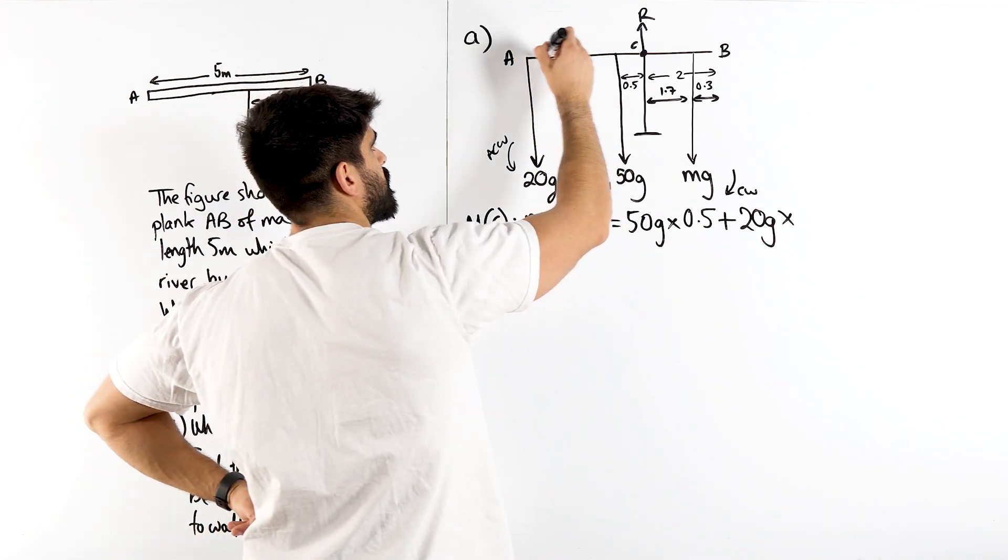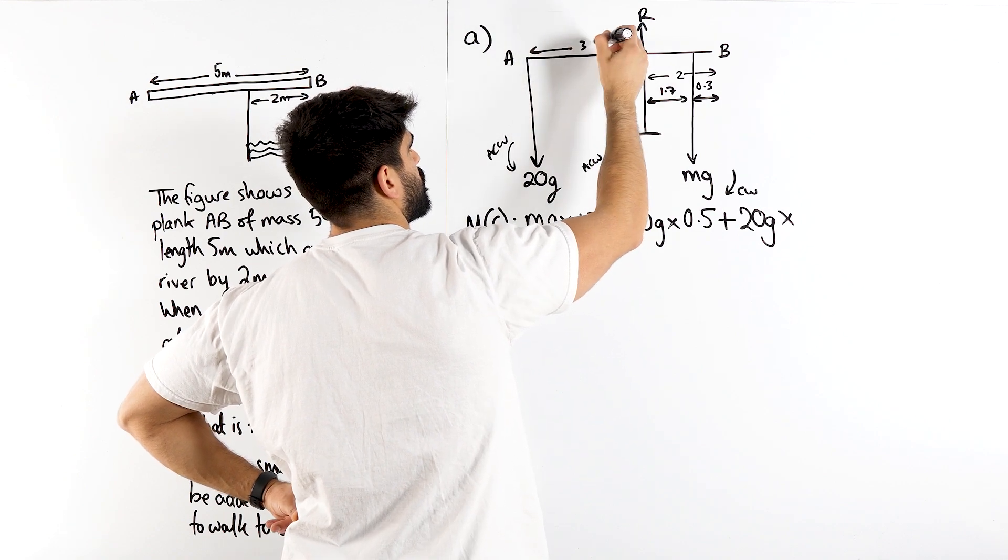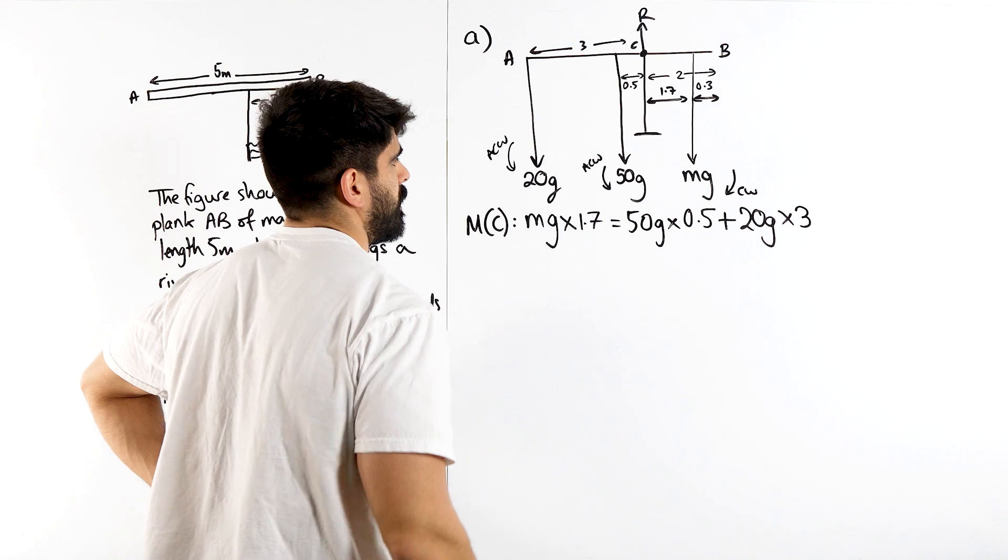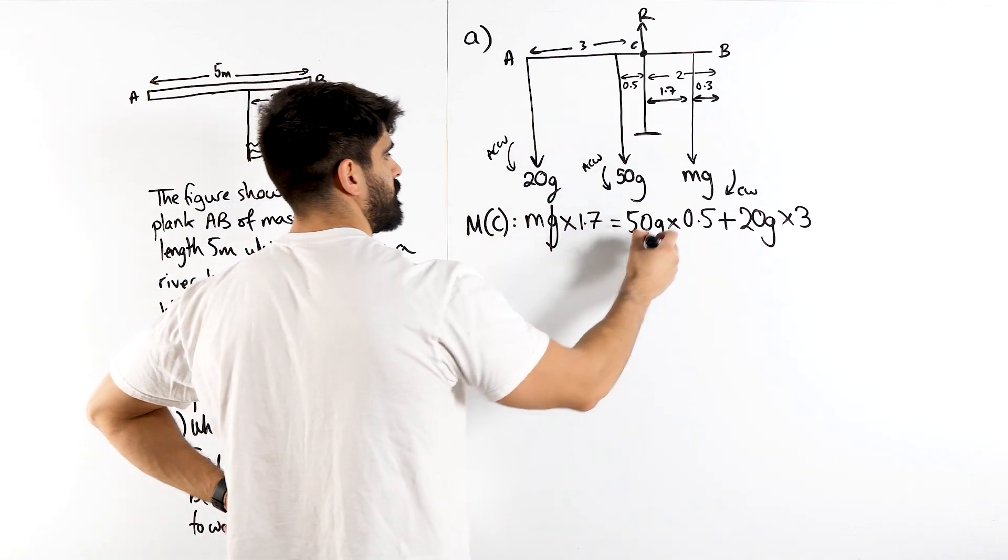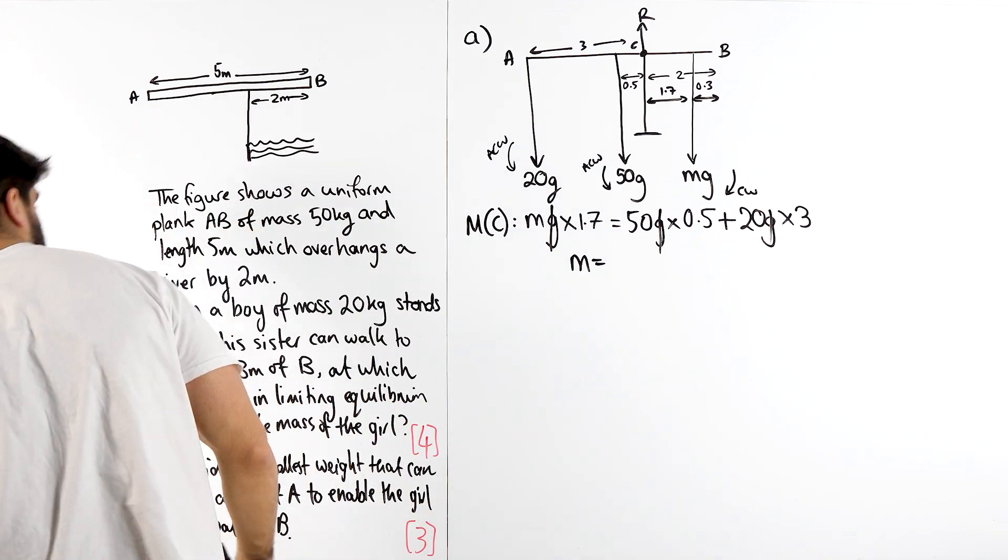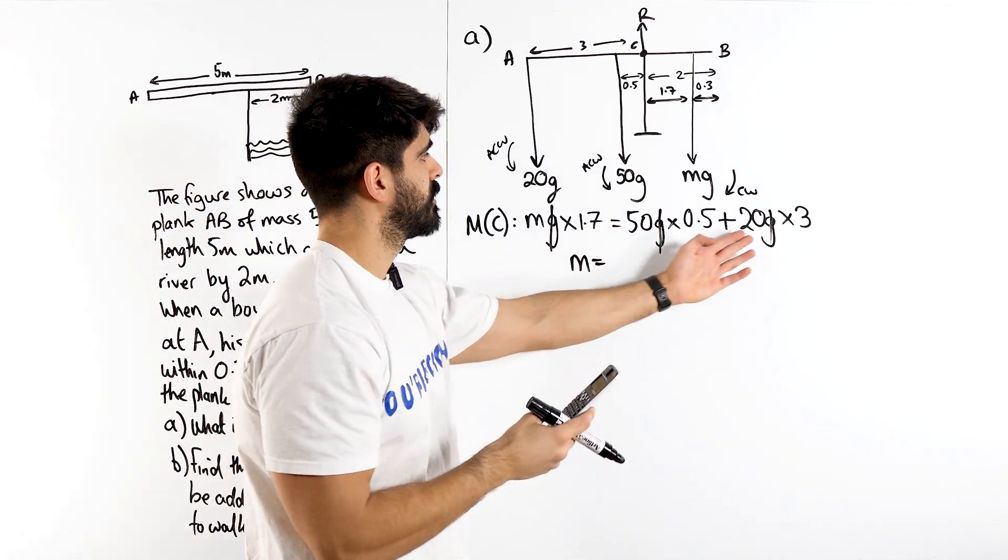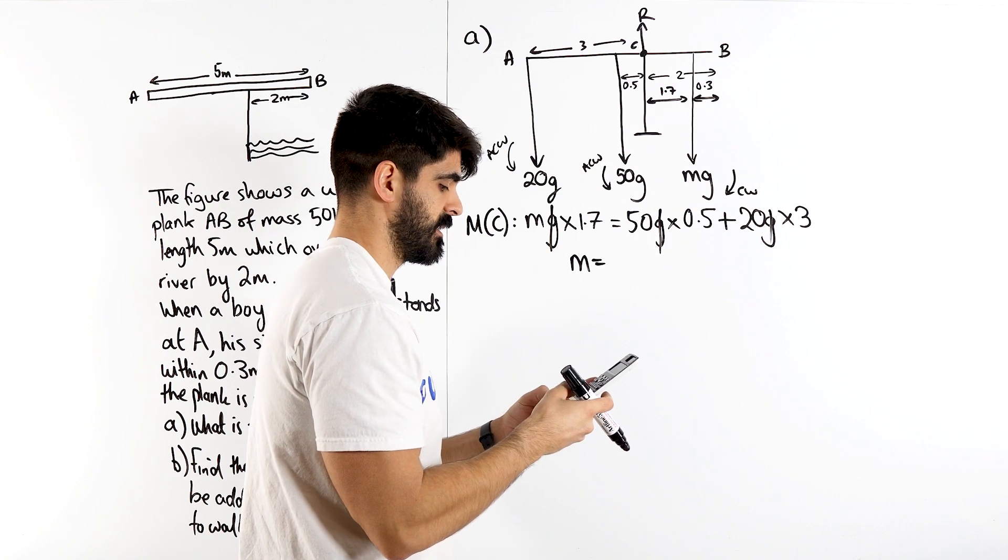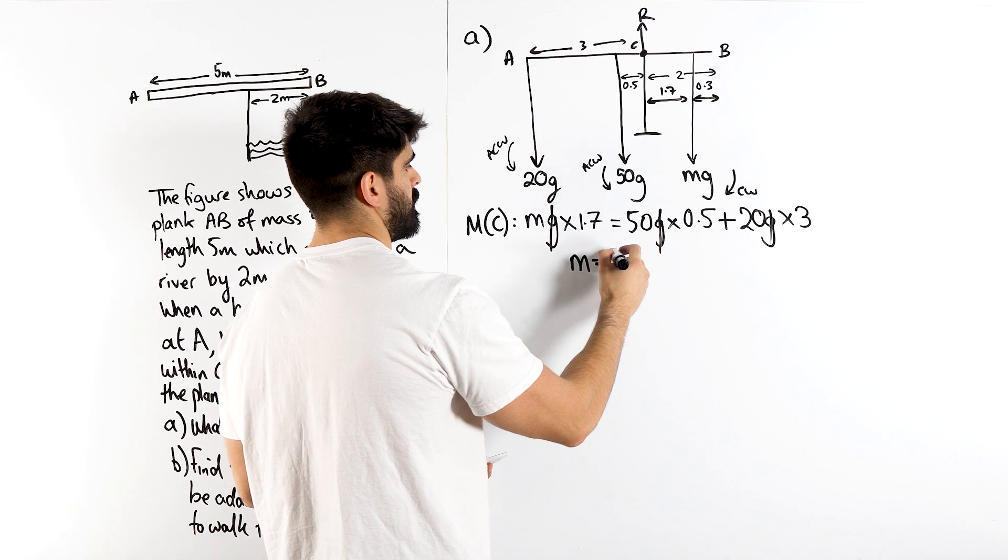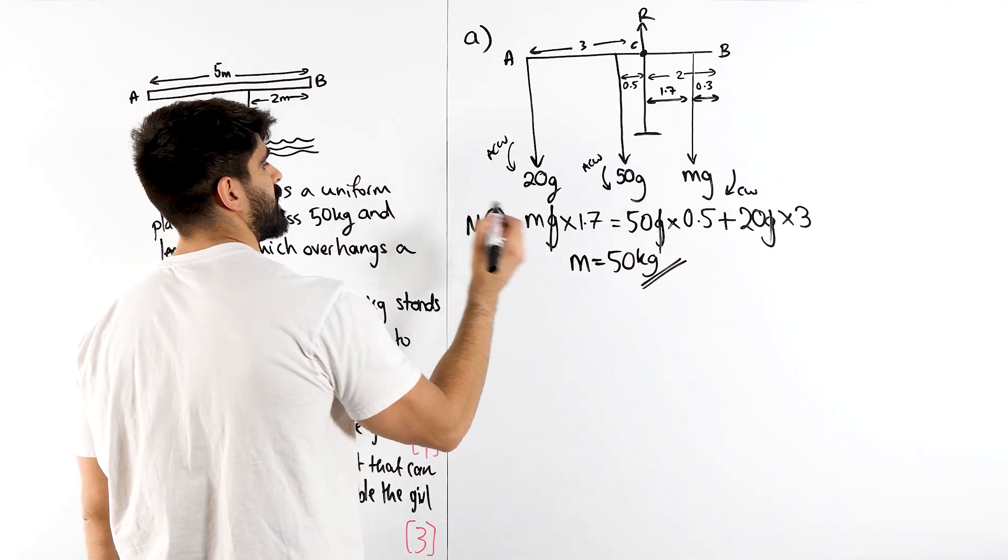Yeah, so that must be 3 if that's 2. From here we can cross off the Gs and rearrange for M. So from here, we're doing 50 times a half, so 25, plus 20 times 3 is 60. Divide that by 1.7, we get 50. 50 kg girl. That's part A.